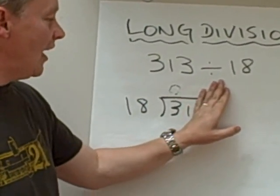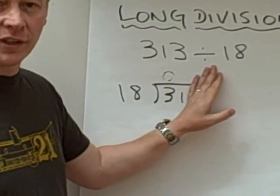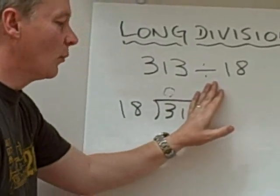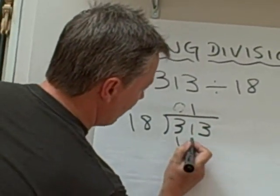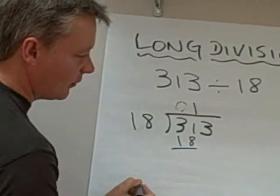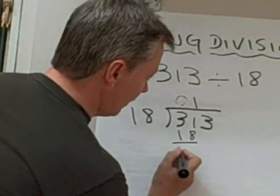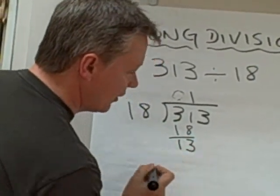Then the next question is, how many times does 18 go into the number 31? Well, it goes once. And what I can do is write 18 at the bottom there and take away the two numbers and it leaves me with 13.